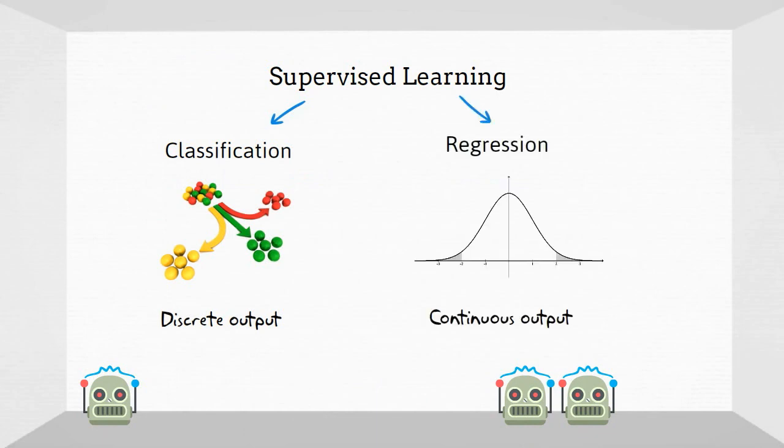Another type of supervised learning is regression, where the output is continuous instead of discrete.